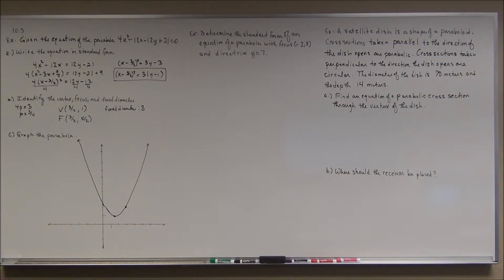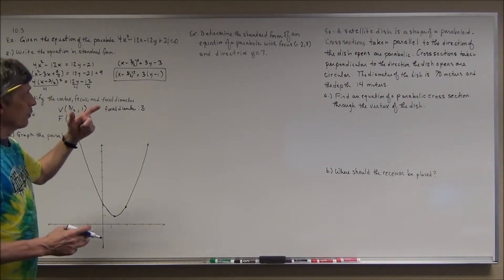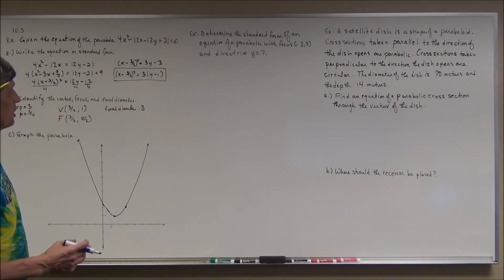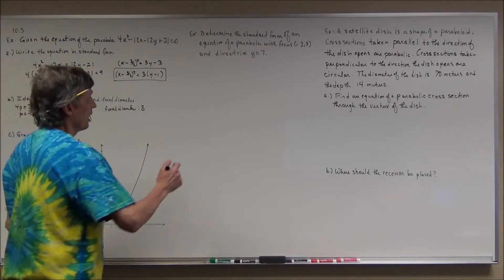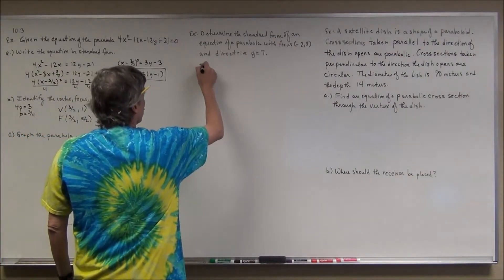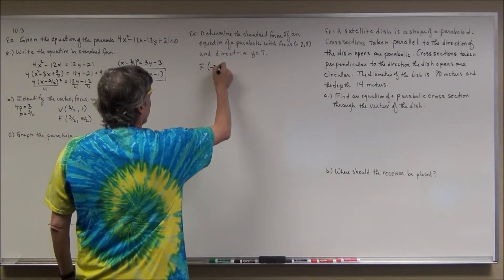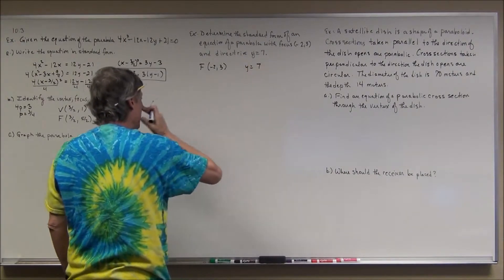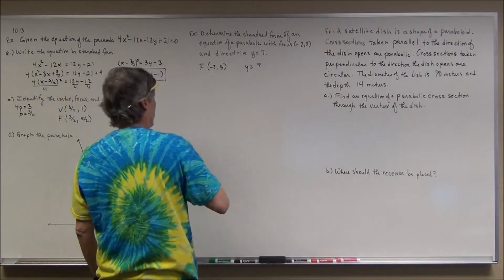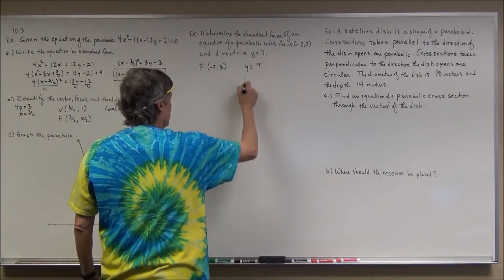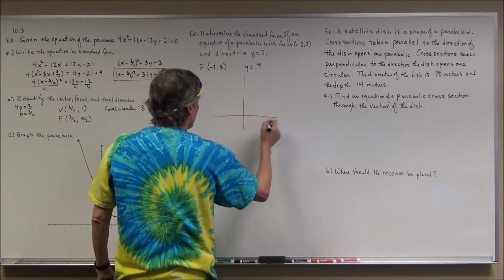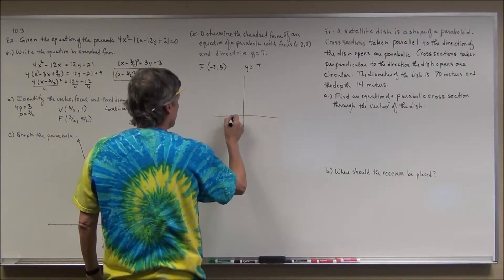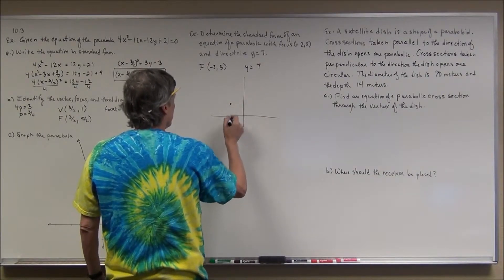In the next example, rather than rewriting an equation in standard form, I'm going to come up with the standard form of the equation from given information. They gave me the focus at (negative 2, 3) and the directrix y equals 7. I'll start by making a rough sketch.